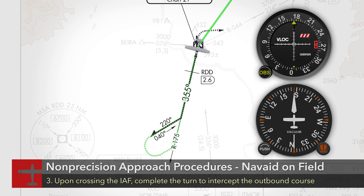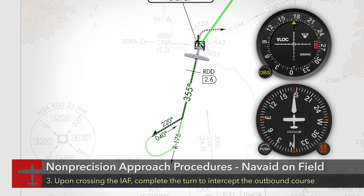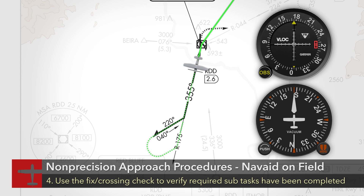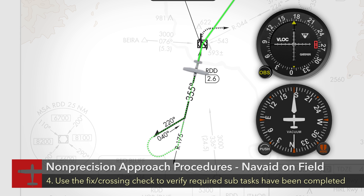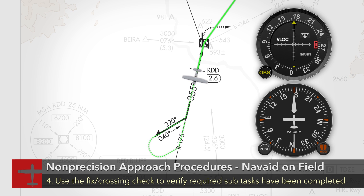Upon crossing the nav aid or initial approach fix, complete the turn to intercept the outbound course. After passing the initial approach fix, use the fix crossing check to verify that the required subtasks have been completed.